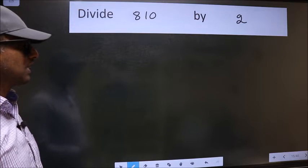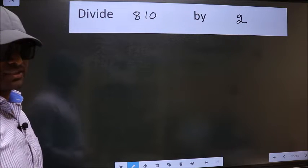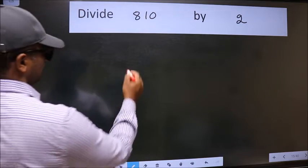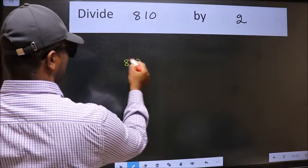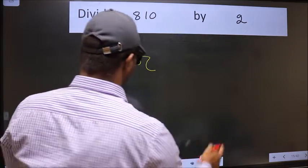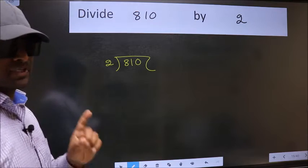Divide 810 by 2. To do this division, we should frame it in this way: 810 here and 2 here. This is your step 1.